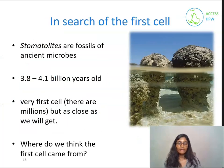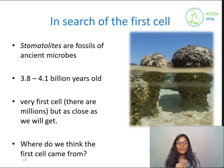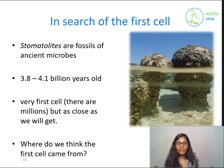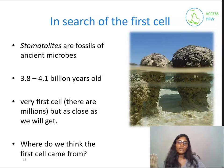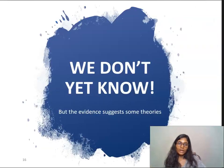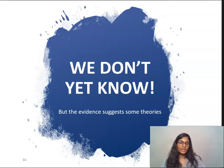The first evidence of life were fossils from 3.5 billion years ago. These were fossils of stromatolites, which are fossilized bacteria that form sheets on top of each other. They may not be the very first cells, but they are as close as we can get to what could have been the first cells. Where do we think the very first cells come from? The answer is, we don't know yet. But we have some theories on where life came from that led to these first cells.